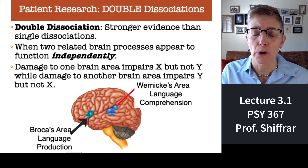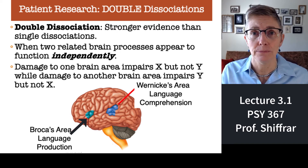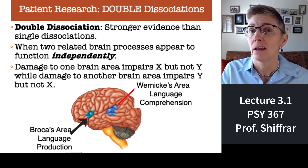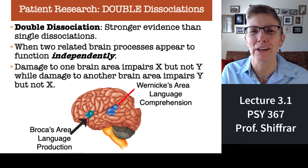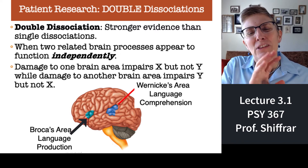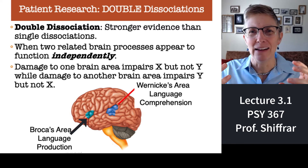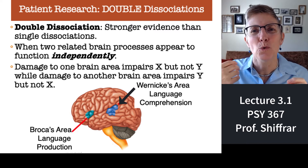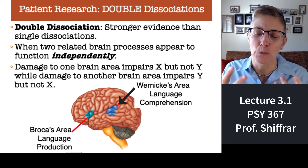Broca's area, in part of the frontal lobes, is involved in language production. We'll talk more about the discovery of Broca's area — discovered by Dr. Broca. Language production seems to be separated, more or less, from language comprehension, which seems to take place in Wernicke's area, named after a researcher named Wernicke.